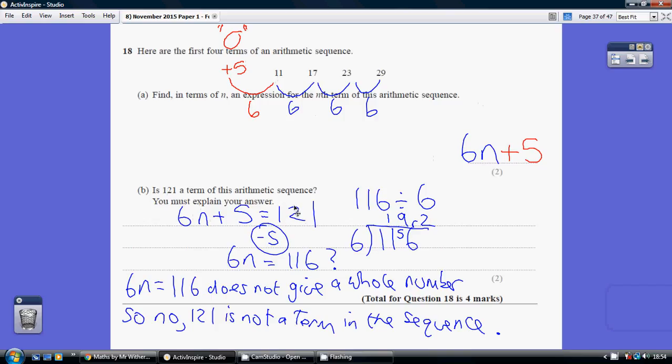So we need to solve this equation. How do we undo adding 5 to each side? We take away 5. So we get 6n equals 116. And how do we undo multiplying by 6? We divide by 6. So do we get a whole number when we divide 116 by 6?